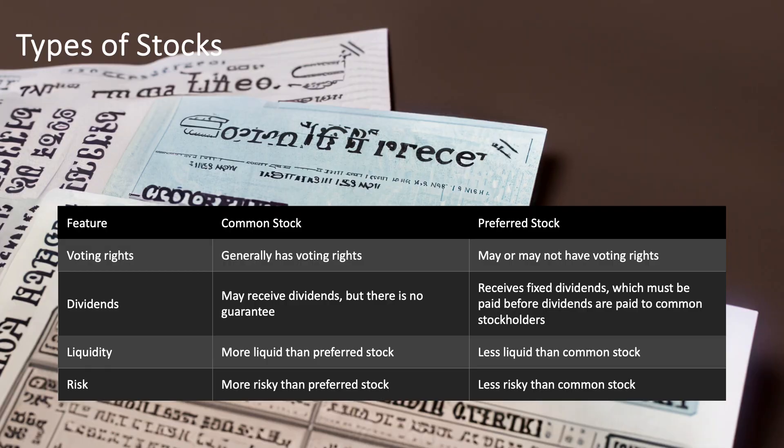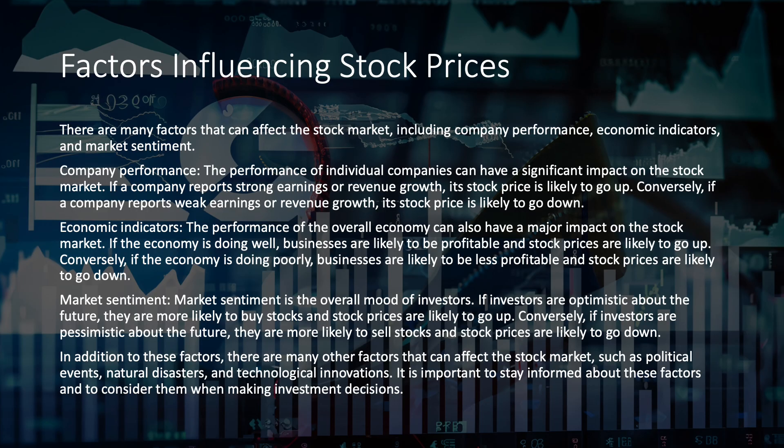Types of stocks. There are two main types of stocks: common and preferred. Common shareholders have voting rights and may receive dividends, while preferred shareholders have priority in dividend payments but limited voting rights.